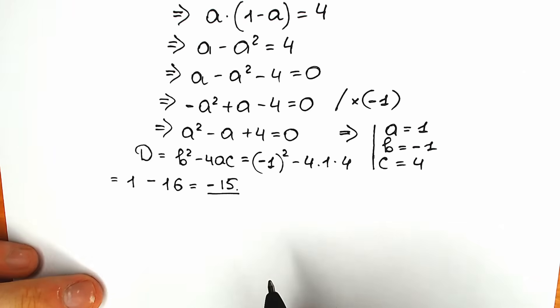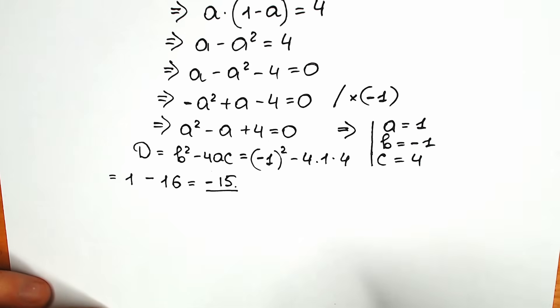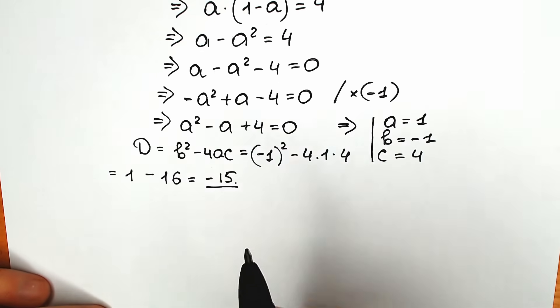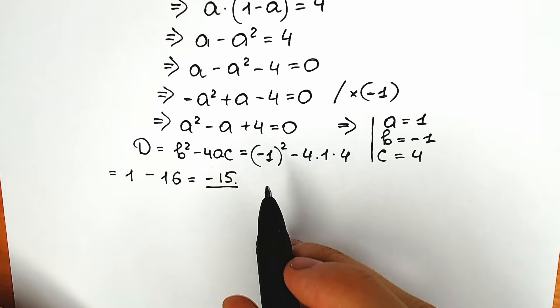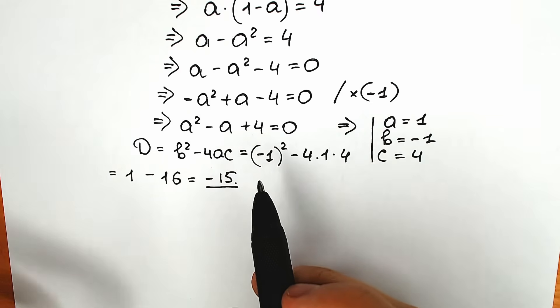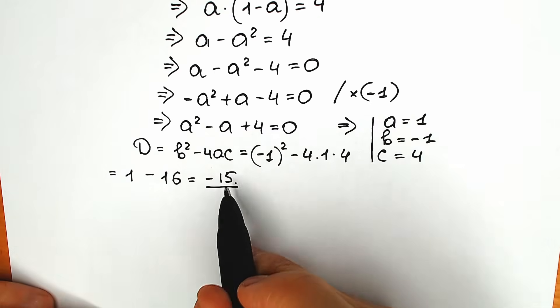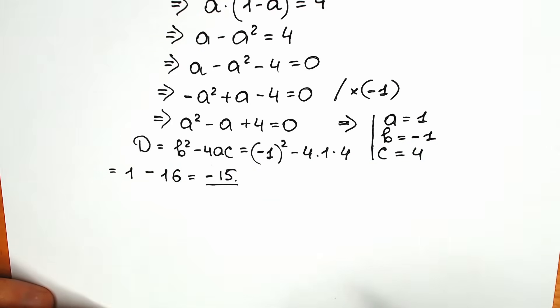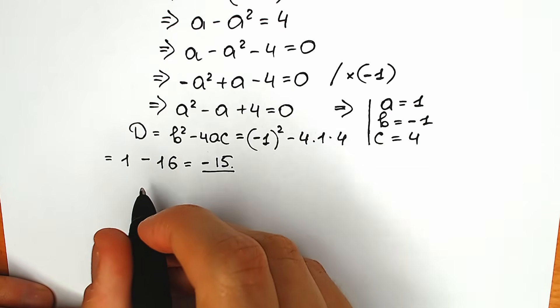Since our discriminant is negative, we can say that we have complex roots. In school terms, there are no real number roots. But in our case we are interested in finding the full solution, so we're going to find our complex pairs of solutions.